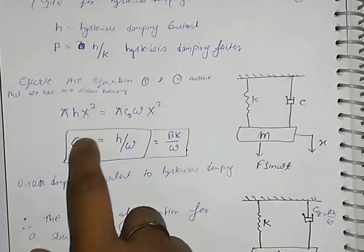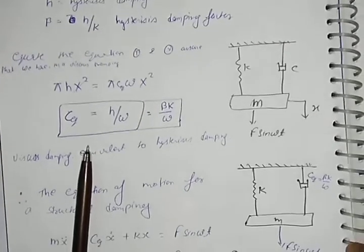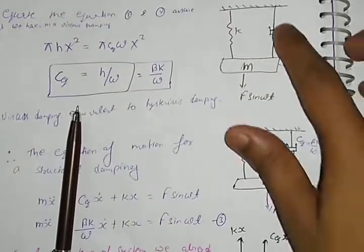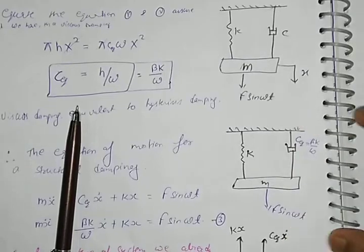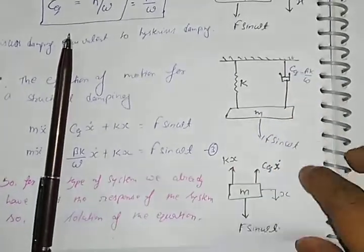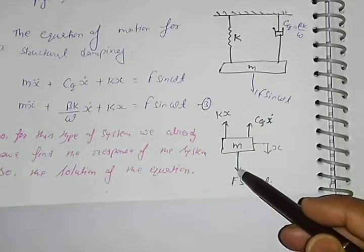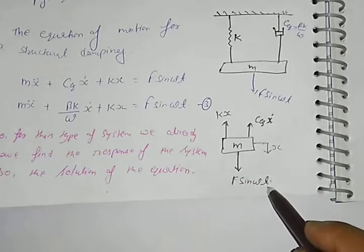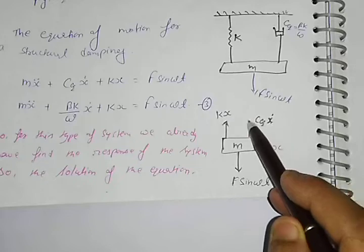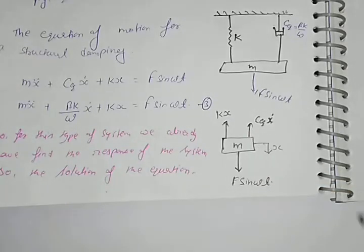We calculate c_equivalent to convert the system to an equivalent viscous form. The free body diagram shows that due to forced vibration, the force acting on the mass is F·sin(ωt); due to the spring, the force is kx; due to damping, it is c_equivalent·ẋ; and the inertia term is mẍ.